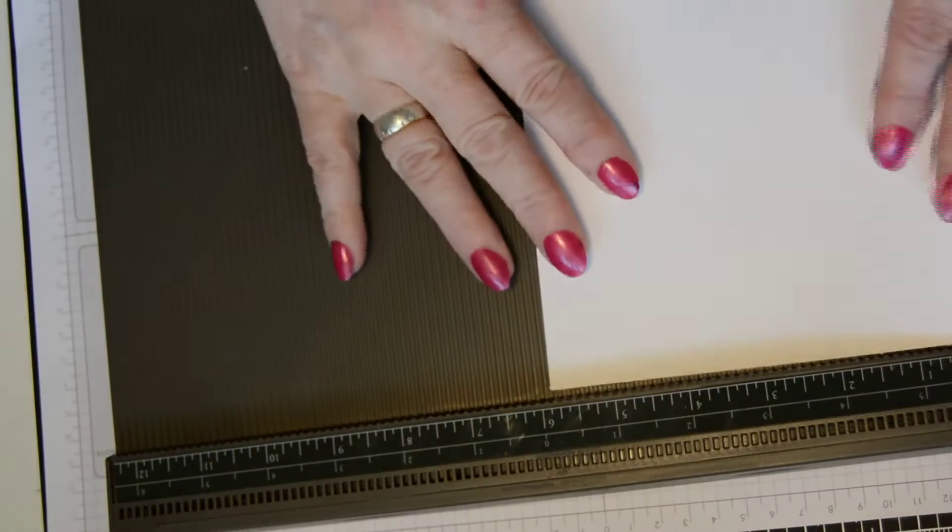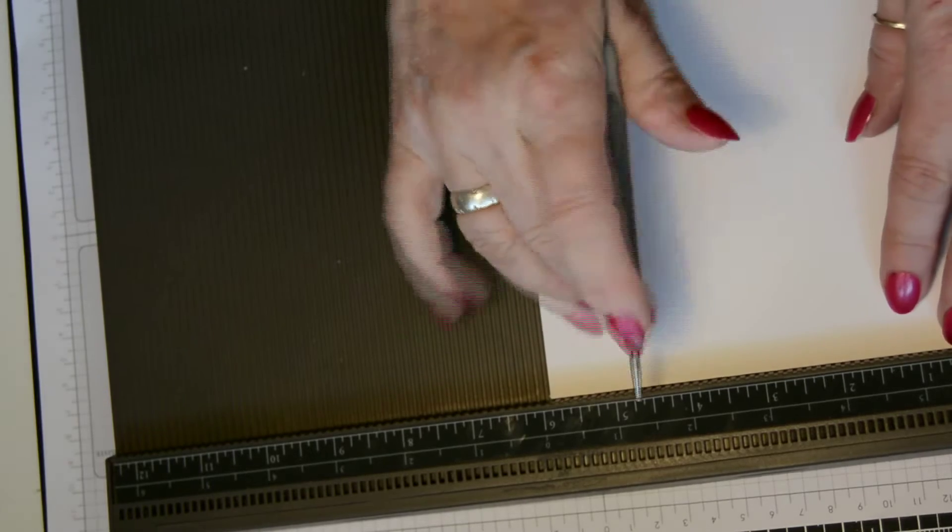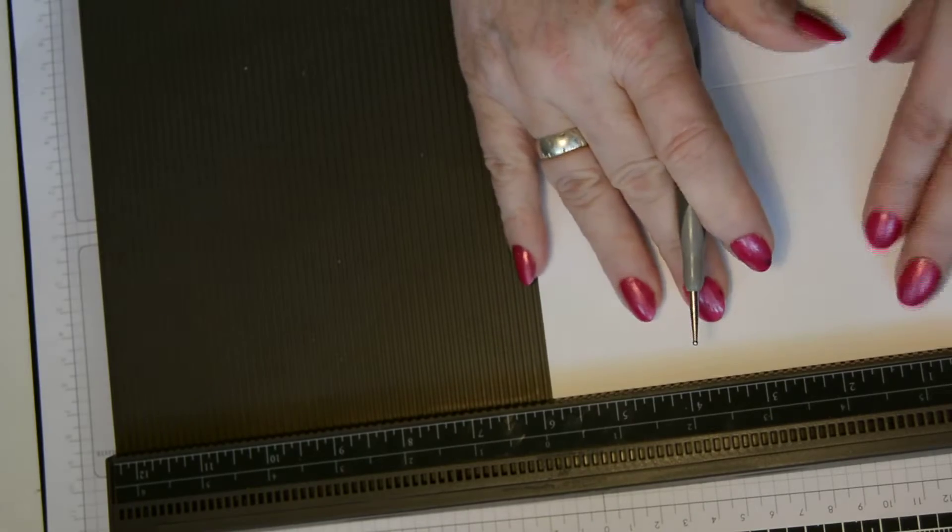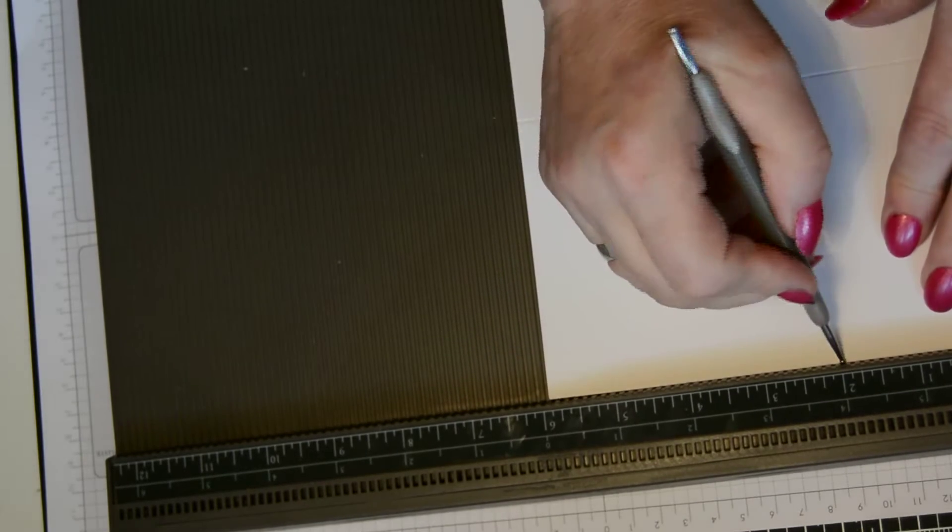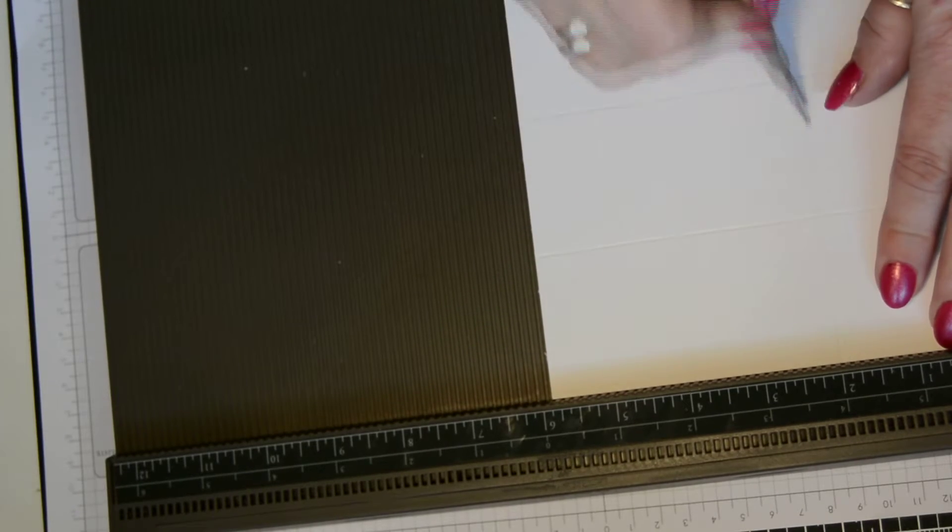What we'll do is take our scoring tool and we will score on two inches on all four sides. Pop that to one side.